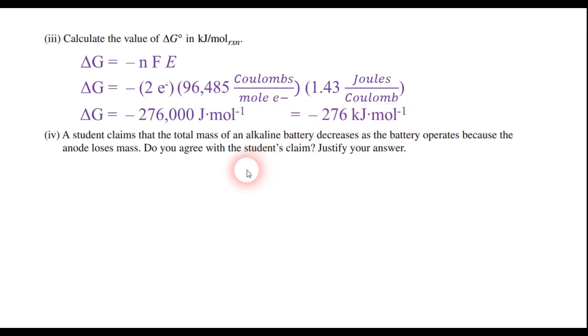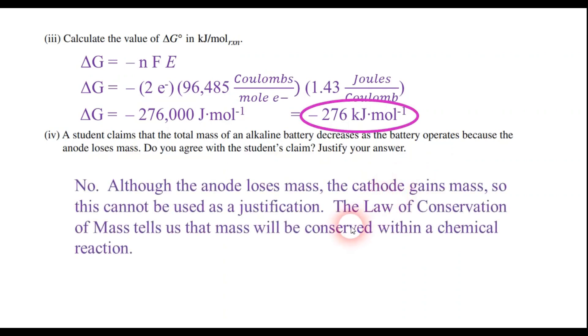Now part four says that a student is claiming that the total mass of the battery decreases as the battery operates because the anode loses mass. I disagree. And the reason I disagree is that yes, that anode loses mass. The fact is the cathode gains mass. Or like I said in my review video, the cat gets fat. So we can't use that as a justification. What I would use as a justification is the law of conservation of mass. That tells us that mass is going to be conserved within a chemical reaction. So as long as this battery is not defective or corroding or something, the battery's mass should not be changing.